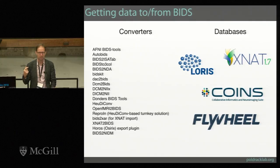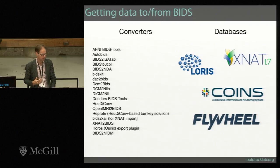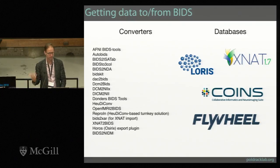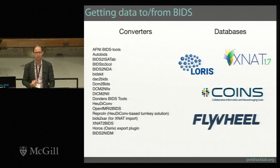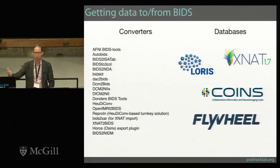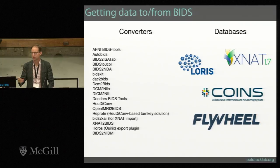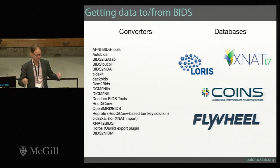There are now a number of converters that allow one to get data into BIDS — a notable one is heudiconv, but there are many other tools. There are also tools to get data out of BIDS, for example into ISA-Tab or NIH data archive formats. In addition, a number of databases now support export to BIDS. Most recently, Flywheel added that as a gear in their toolbox, making it increasingly easy for researchers to get their data straight from the database into BIDS format. The reformatting of data is certainly the hardest part of using BIDS — once your data are in BIDS, everything's easy.